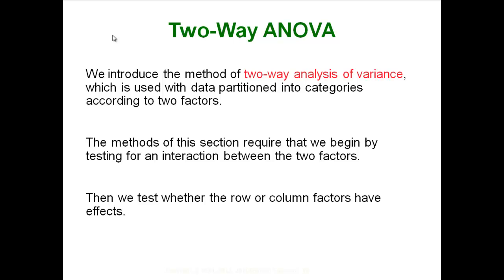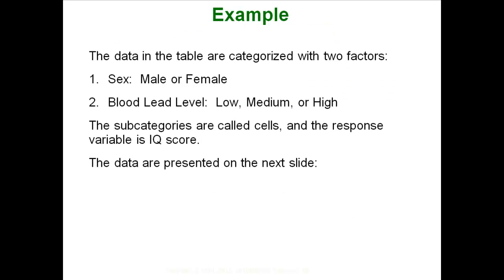Welcome to our discussion on the two-way ANOVA. We saw previously how to run a one-way analysis of variance where we had data categorized in only one way. Now we are going to look at a way to test when we have data categorized two ways. A simple example would be data in a table categorized by gender and by the level of lead in their blood.